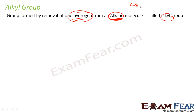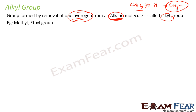For example, I have methane. From this you remove one hydrogen, you get CH3. This becomes an alkyl group. The name is methyl — methyl, ethyl — all these are alkyl groups.